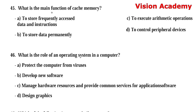Question 45: What is the main function of cache memory? Option A: to store frequently accessed data and instructions. Option B: to store data permanently. Option C: to execute arithmetic operations. Option D: to control peripheral devices. The right answer is Option A, to store frequently accessed data and instructions.